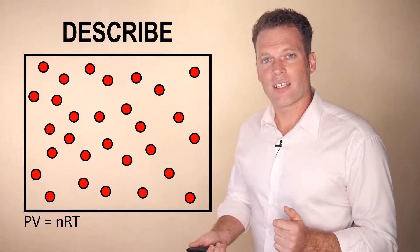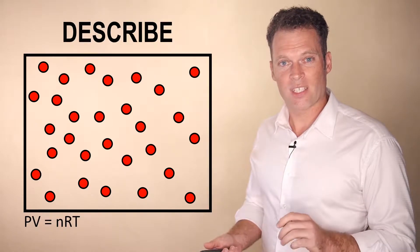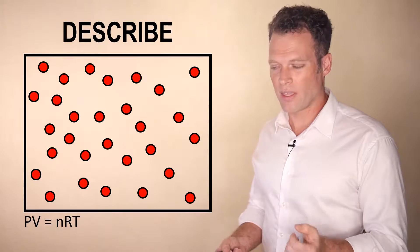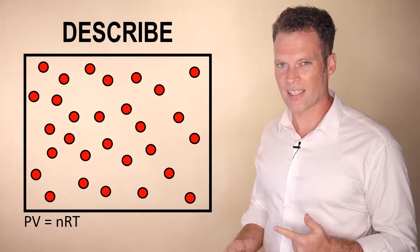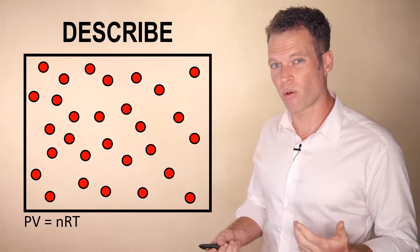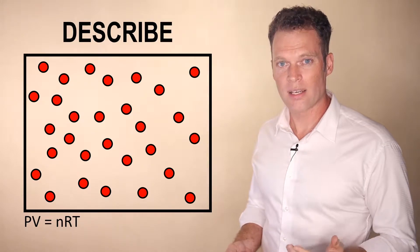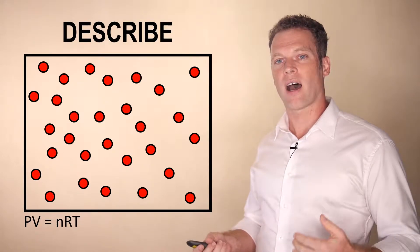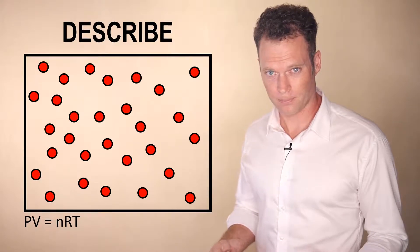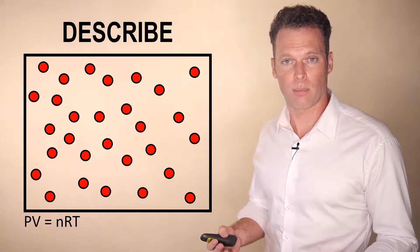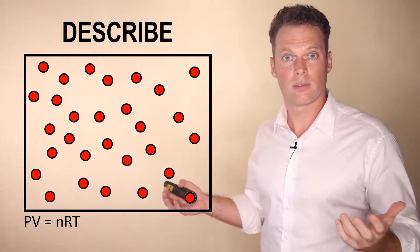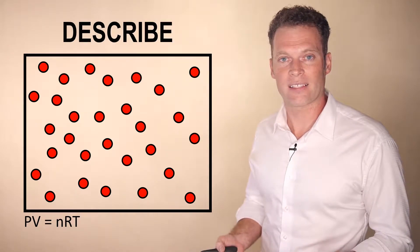Now, a general description of how gases behave is contained in the ideal gas law. I think you're familiar with this. The pressure times the volume of a gas equals the number of moles, which corresponds to the number of molecules times the universal gas constant times the temperature. And this is established for gases. This is how gases behave.